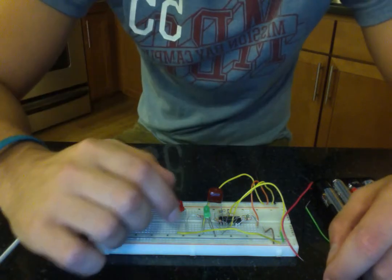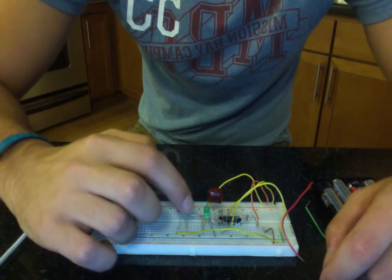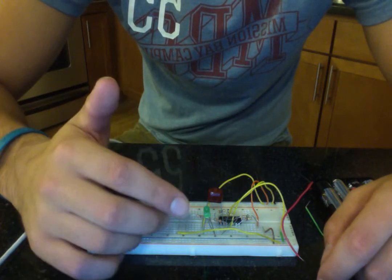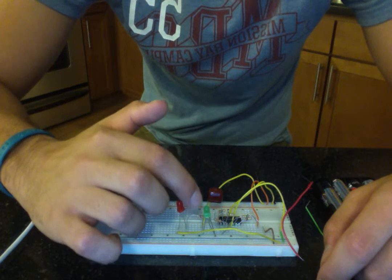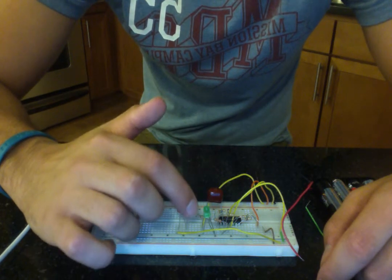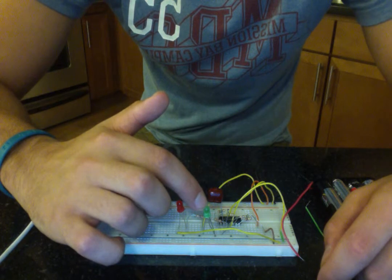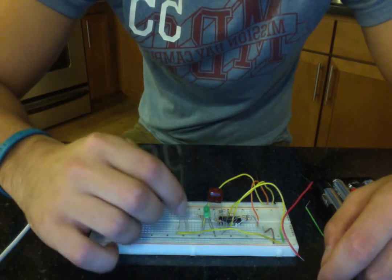Basically what the circuit does is one LED starts lit up. For this instance, the green one's going to start, then it slowly dims and turns off, and then the next one turns on.